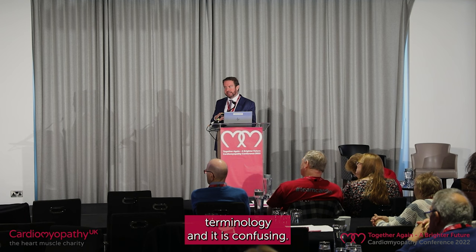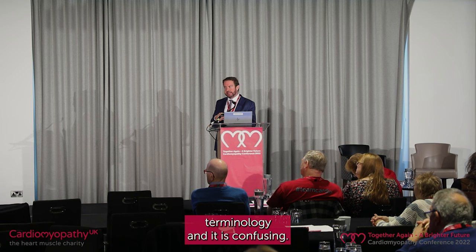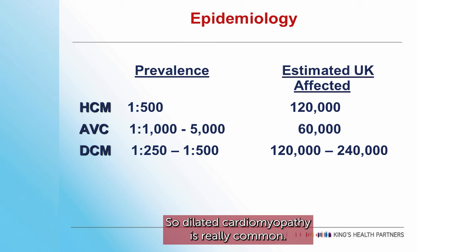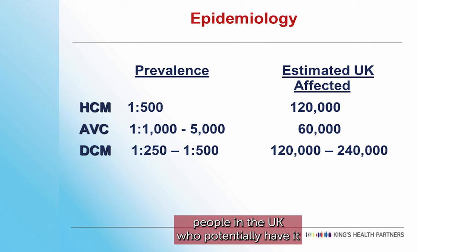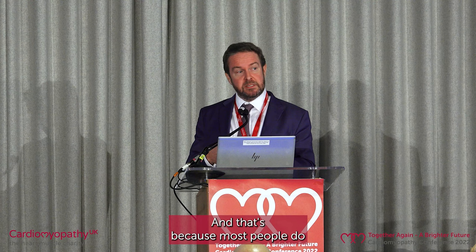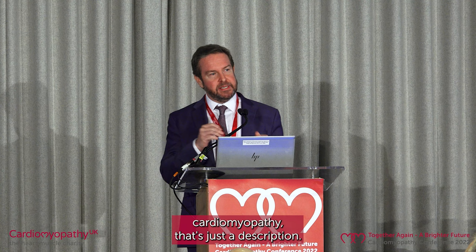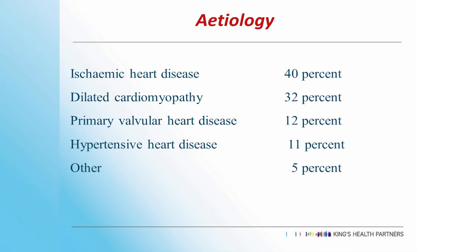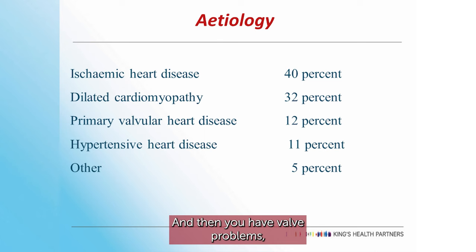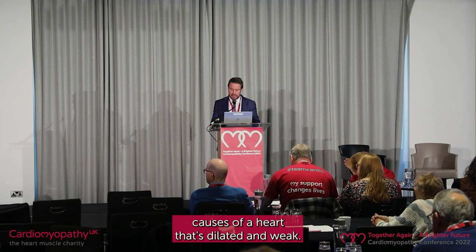That's a little bit about all the different terminology — it is confusing, particularly because it seems to change every few years. On the epidemiology: dilated cardiomyopathy is really common — about one in 300 of the population probably has it. There are probably about 250,000 people in the UK who potentially have it, and probably only about 30% realise they've got it, because most people do quite well and don't have symptoms. If you take all types of cardiomyopathy, coronary artery disease is the commonest cause, dilated cardiomyopathy is the second commonest, and then valve problems and high blood pressure.